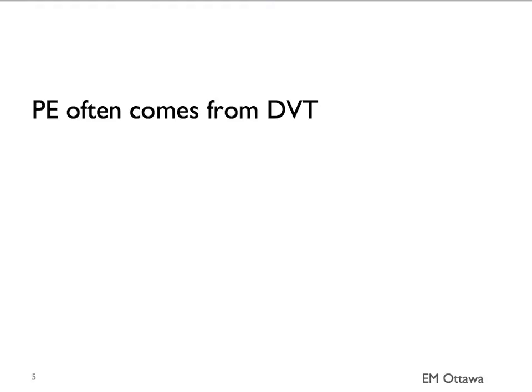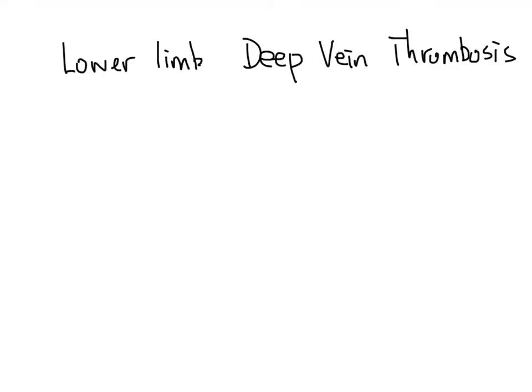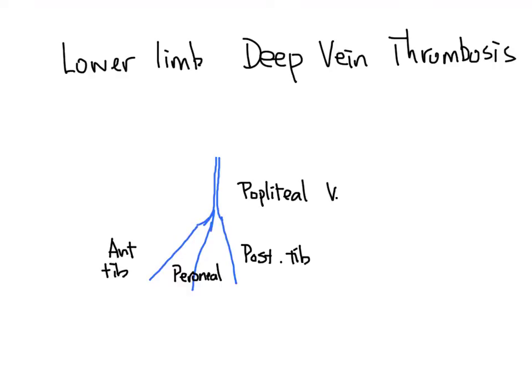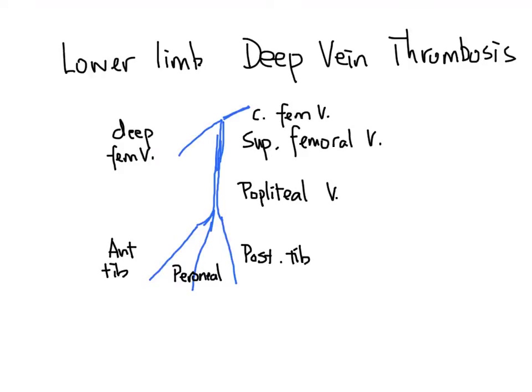Most pulmonary embolisms do not originate from the lung. Rather, they have migrated from somewhere else. The most common sites are from deep vein thrombosis of the lower limbs. These deep veins include the anterior tibial, posterior tibial, and peroneal vein from below the knee; the popliteal vein behind the knee; the superficial and deep femoral vein; the common femoral vein; and further up into the external iliac veins.